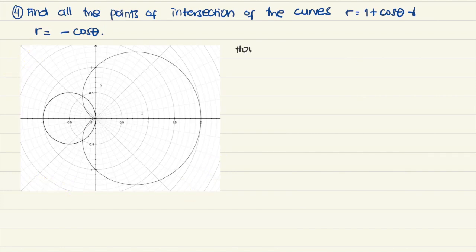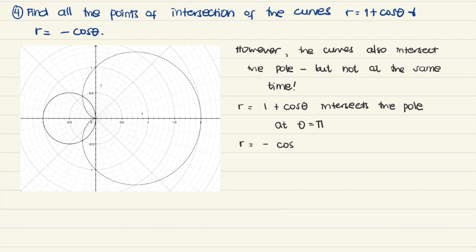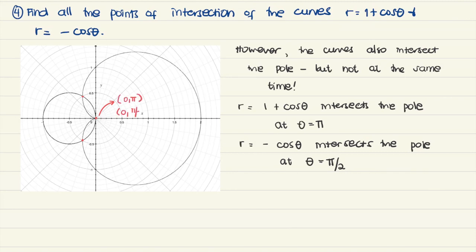But is that all? Looking at the graph, we can see that both curves also intersect at the pole. Why wasn't this computed? Because it doesn't happen at the same theta. The first curve r equals 1 plus cosine theta intersects the pole at theta equals pi, since sine theta would equal negative 1. Meanwhile, r equals negative cosine theta intersects the pole at theta equals pi over 2. So they don't intersect the pole simultaneously, giving us three points in total: (0, pi) and (0, pi over 2), (1/2, 2 pi over 3), and (1/2, 4 pi over 3).